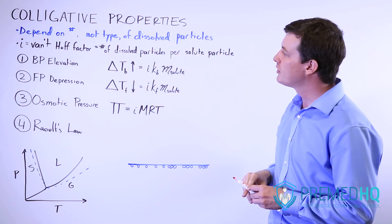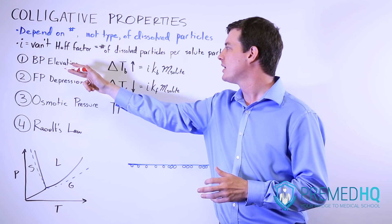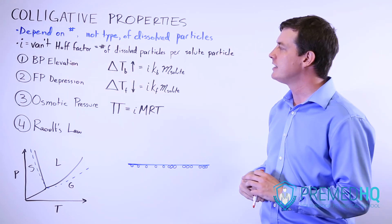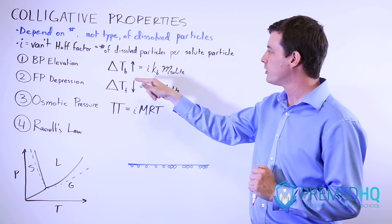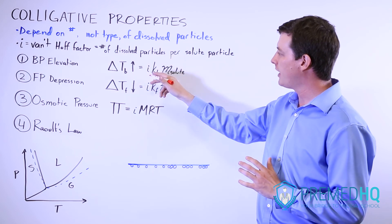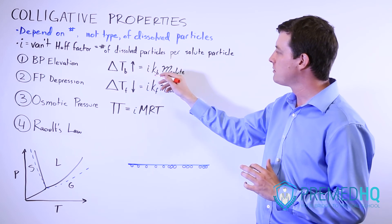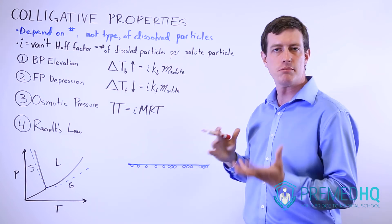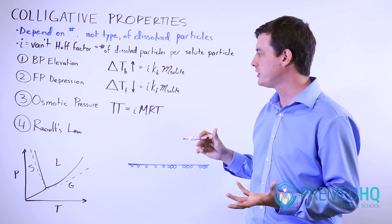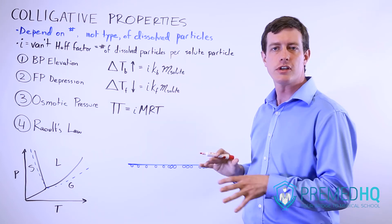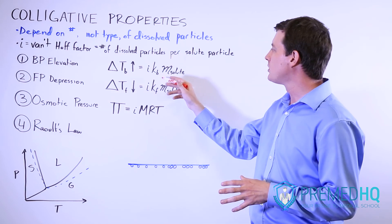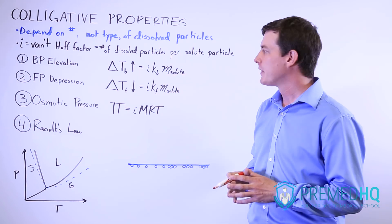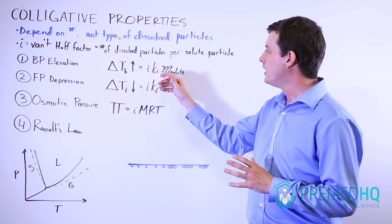The first two we'll go through are boiling point elevation and freezing point depression, and these have very similar formulas. You take the Van't Hoff factor, multiply it by some constant — Kb for boiling point elevation and Kf for freezing point depression — and then multiply by the molality of the solute.